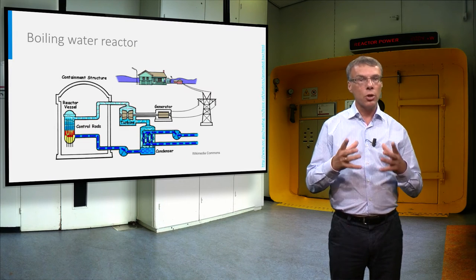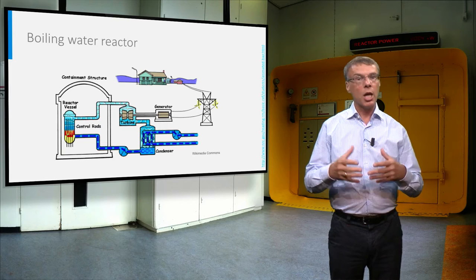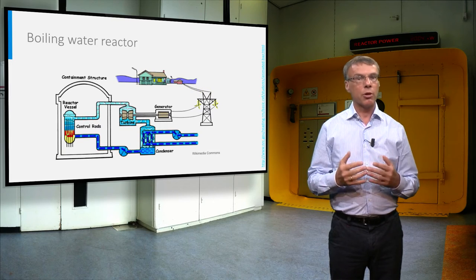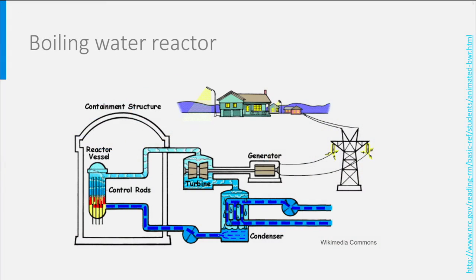Another type of reactor also works with water as a coolant, but at a lower pressure of around 70 bar and a temperature of about 285 degrees Celsius. As a result, the water starts boiling in the reactor vessel, and the steam produced drives the turbines directly.